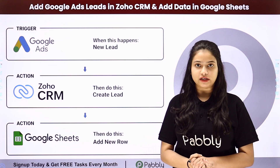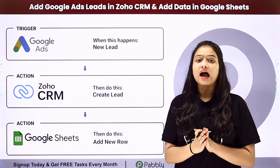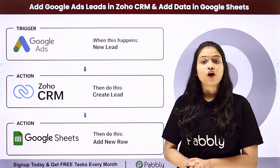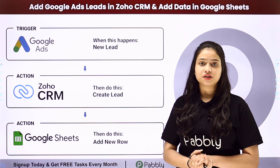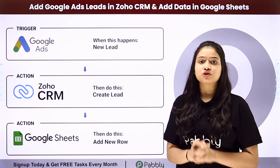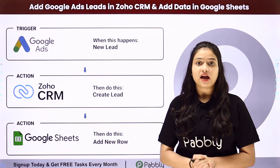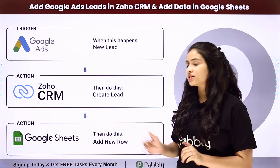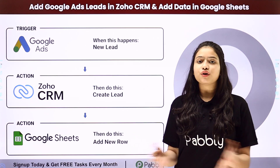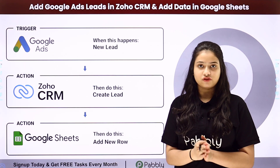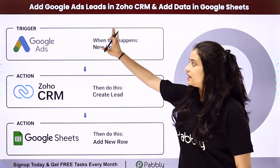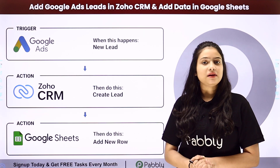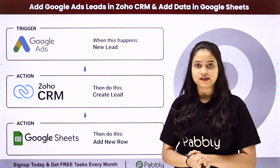Suppose I am having an event management company and to promote my business, I have created a lead gen form using Google Ads. Now I want that whenever a new lead is generated through it, automatically the same lead should be added in my Zoho CRM account. And I also want the data of the same lead to be added in my Google Sheets to create a record. So how are we going to do this process automatically and effortlessly? For that we will have to integrate all these applications, and we are going to use Pabli Connect, which is an amazing automation and integration software.